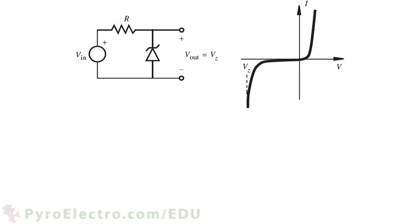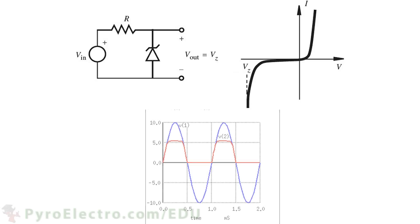But what about the effect of a Zener diode on an AC signal? Well, what ends up happening is that the AC signal will be what is called clipped at the Zener knee voltage. For us, that means at right about 5.1 volts. And after that, the voltage won't increase — it will be clipped.